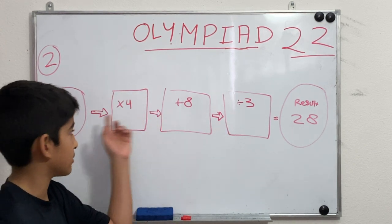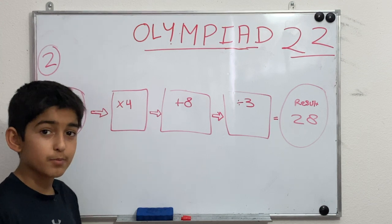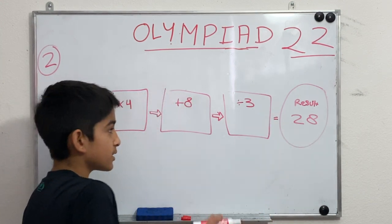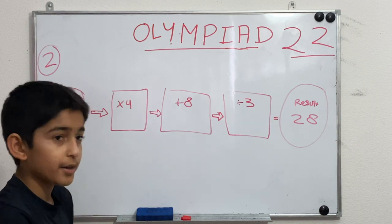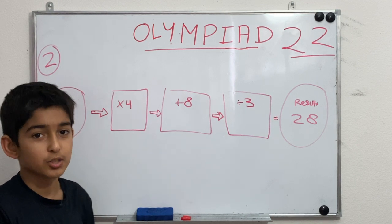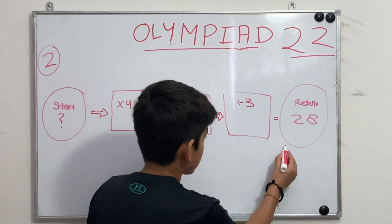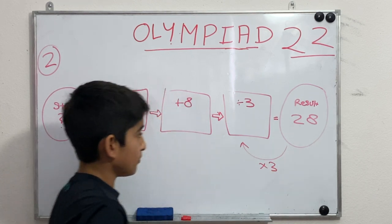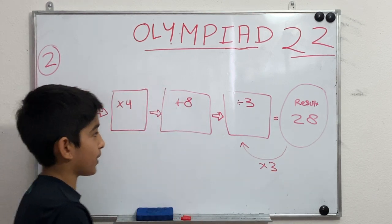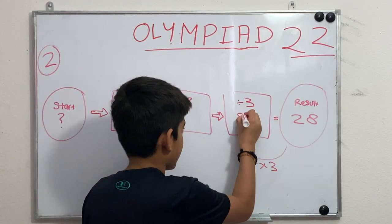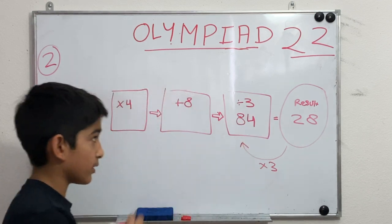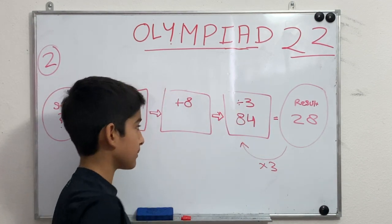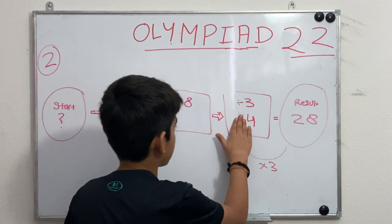Since the last step was dividing by 3, the opposite is multiplying by 3. So we take 28 and multiply by 3 to get 84. We can check: 84 divided by 3 equals 28. So the value before the final division step is 84.